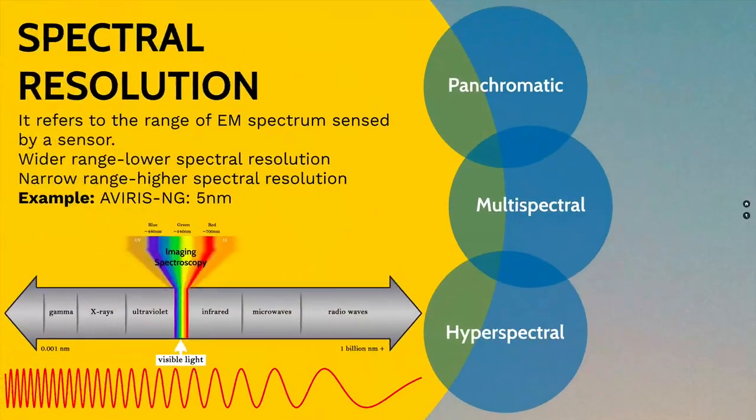We use these multi and hyperspectral remote sensing datasets to measure light energy reflected from objects on the Earth's surface and to estimate many physical and chemical properties of objects that we wouldn't see with our own eyes.